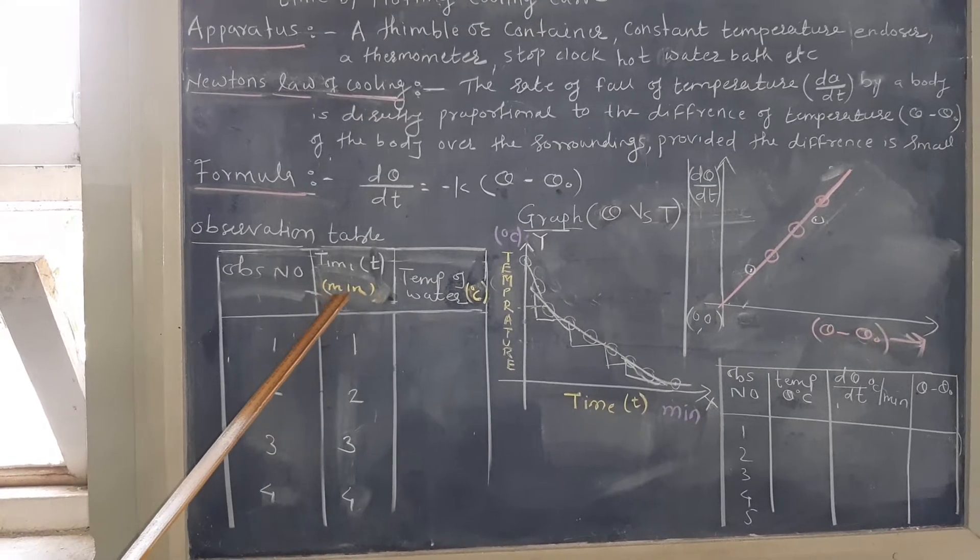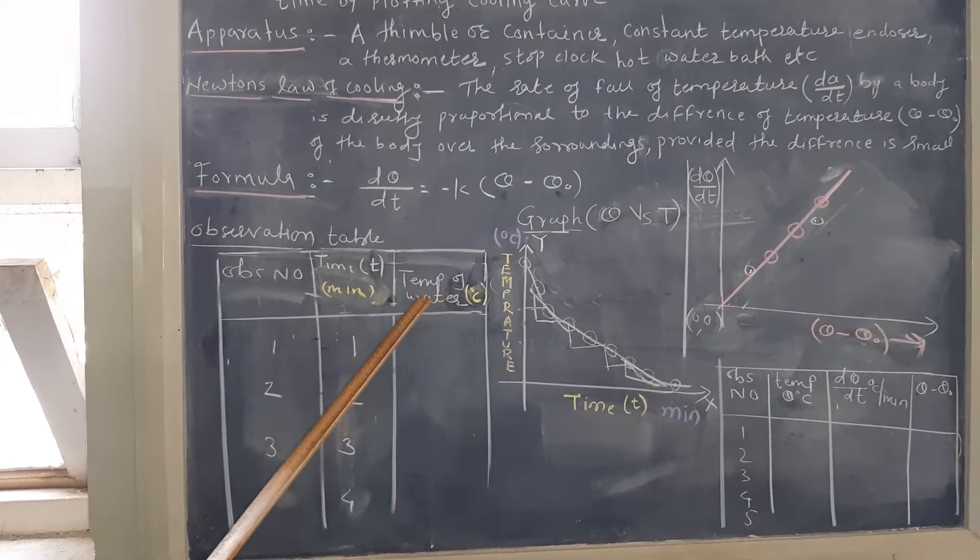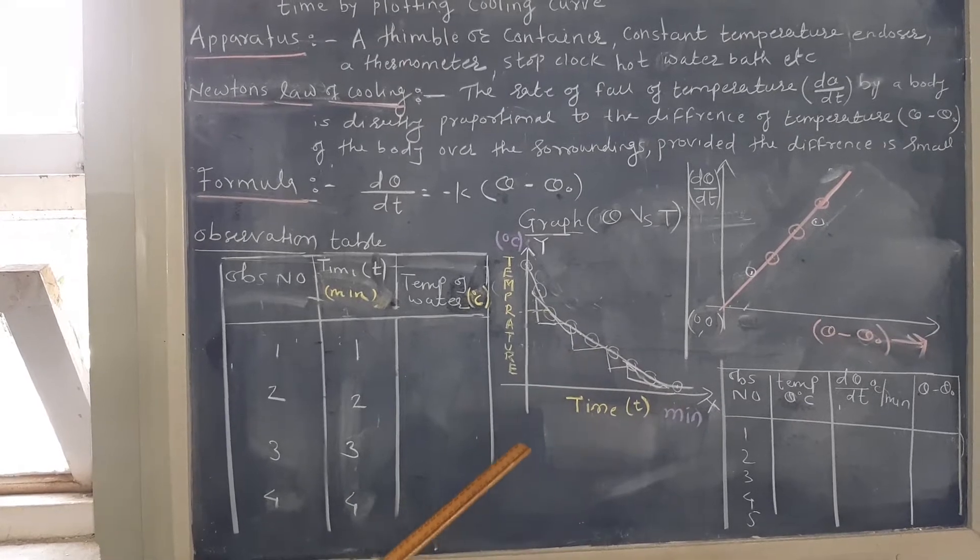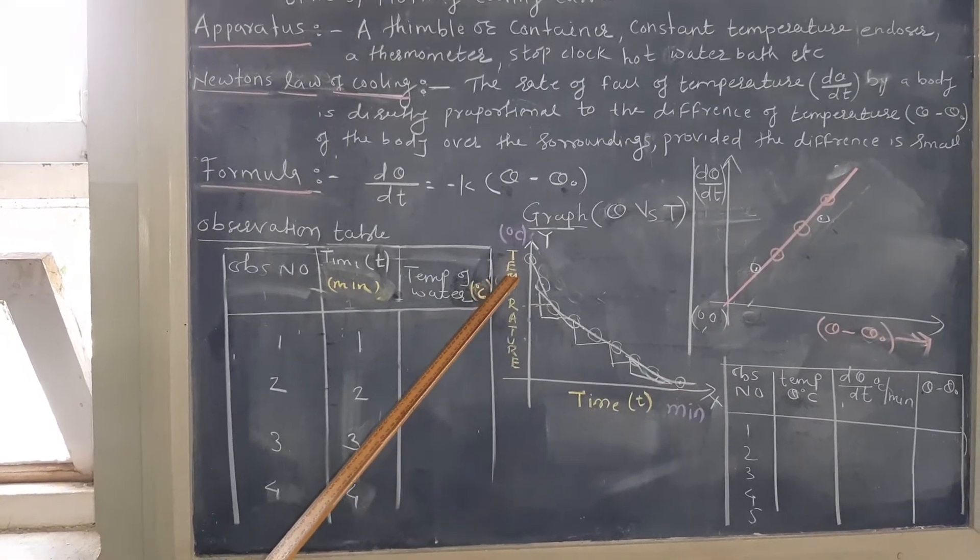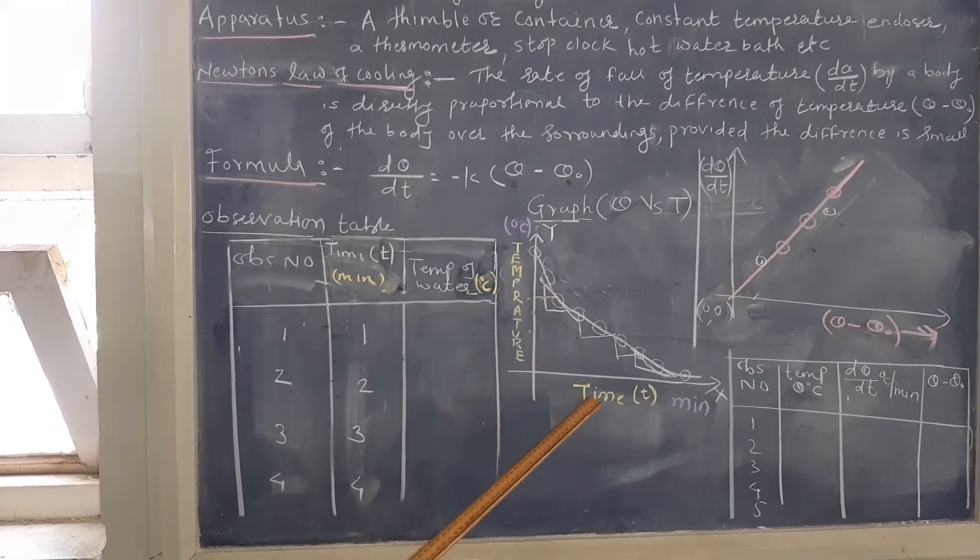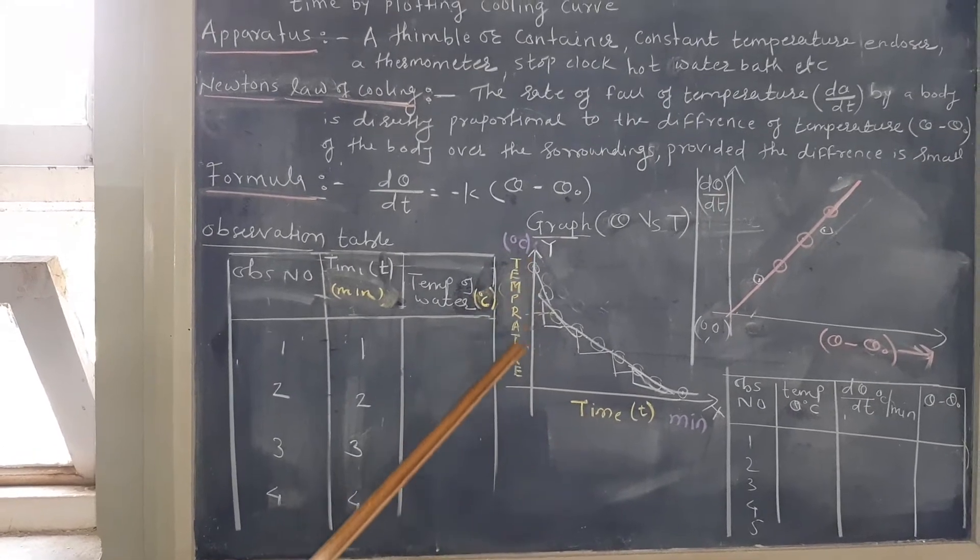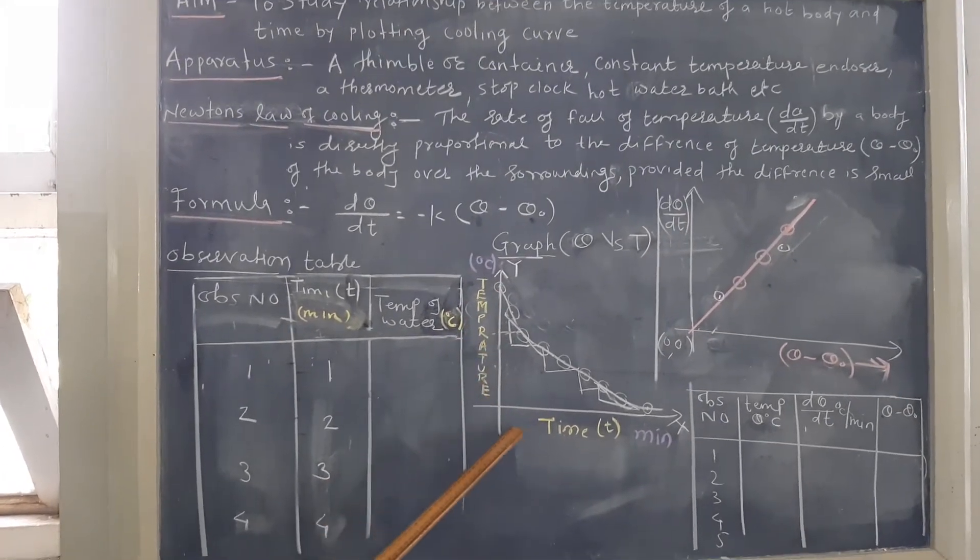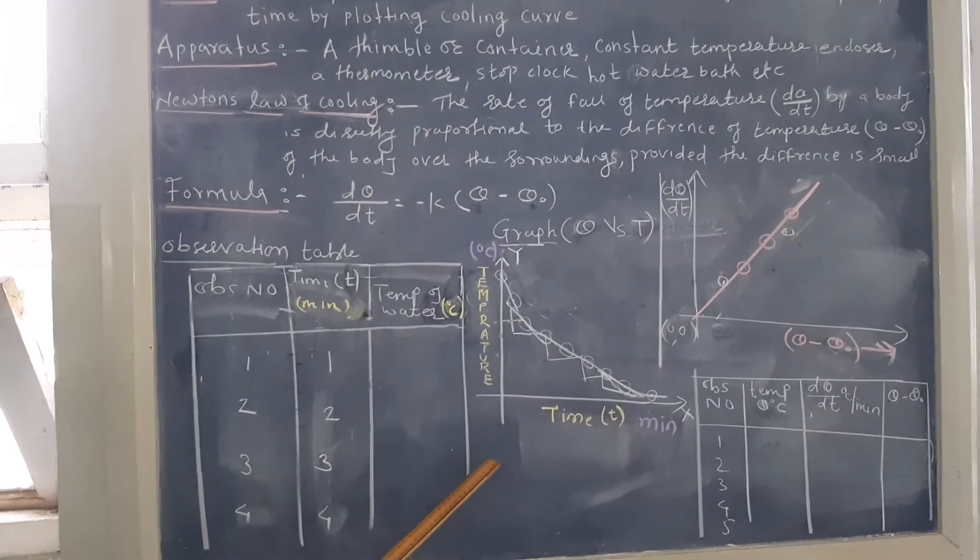So by using the time and temperature of water we need to draw a graph. Here the graph is nothing but temperature versus time. Temperature on y-axis, sorry, temperature on y-axis, time is on x-axis.